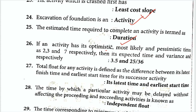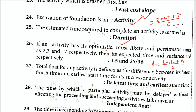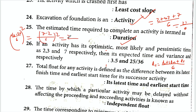The expected time formula is: Te = (To + 4Tm + Tp) / 6, where To is optimistic time, Tm is most likely time, and Tp is pessimistic time. For example: (2 + 4×3 + 7) / 6 = (2 + 12 + 7) / 6 = 21/6 = 3.5. The variance formula is: [(Tp − To) / 6]², so (7 − 2)²/36 = 25/36.